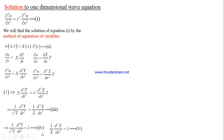By solving these two ODEs, we can find capital X and capital T, and use them in equation number two to obtain our solution for the given partial differential equation. Since lambda is a real constant, it has three choices: lambda equals zero, lambda is a positive real constant, or lambda is a negative real constant.